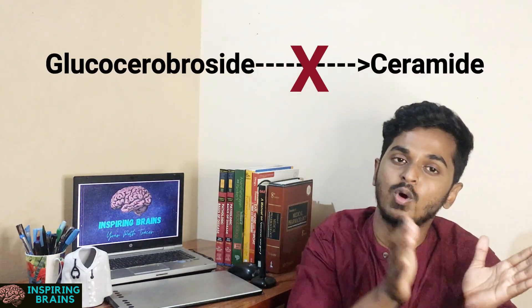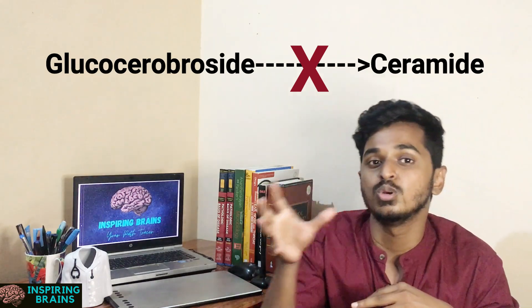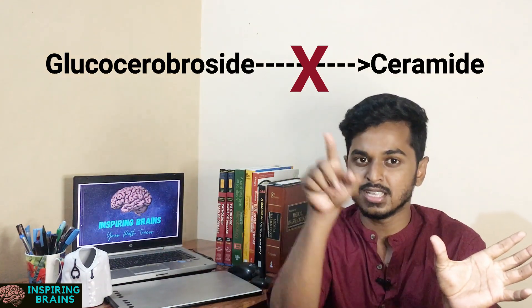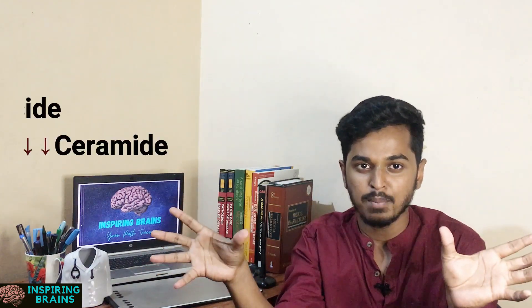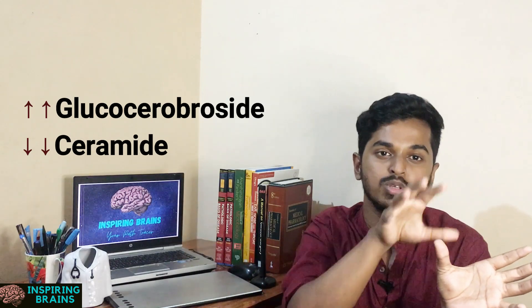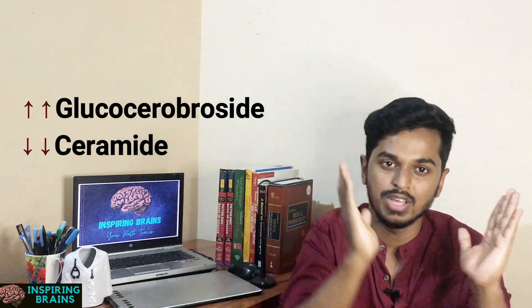How it can be correlated is very simple. For example, if you take Gaucher's disease, this is happening because of the absence of beta-glucosidase. Since the enzyme is absent, there won't be conversion of glucocerebroside to ceramide. This won't be converted to ceramide, so ceramide will be less in amount and glucocerebroside will be accumulated in larger amounts. Very simple.